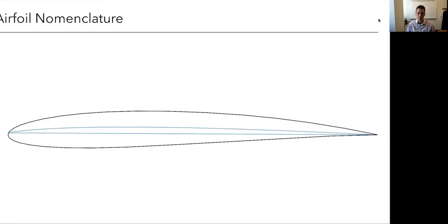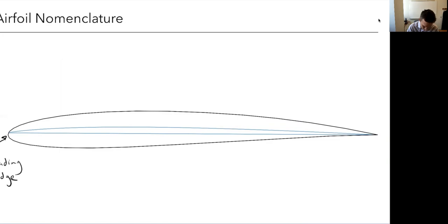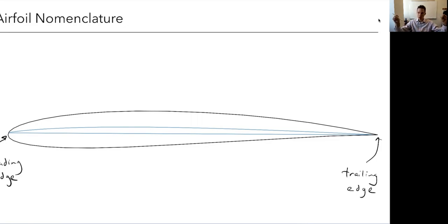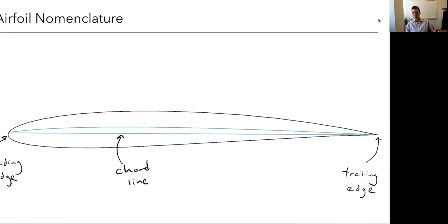Let's first define some basic nomenclature for an airfoil. This black curve here is an airfoil — if you took a wing and chopped a cross section of it, this would be an airfoil shape. The front part is called the leading edge, and the backmost part is called the trailing edge. A straight line from the leading edge to the trailing edge — that's called the chord line, and its length is the chord.